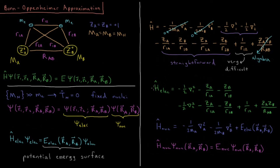In atomic units, the electronic Hamiltonian is: minus one-half del-squared(1), minus Z_A/R1A, minus Z_B/R1B (kinetic energy and nuclear attraction for electron 1), plus minus one-half del-squared(2), minus Z_A/R2A, minus Z_B/R2B (kinetic energy and nuclear attraction for electron 2), plus the electron-electron repulsion 1/R12, and plus Z_A Z_B/R_ab, which is a constant term that simply adds to the electronic energy.